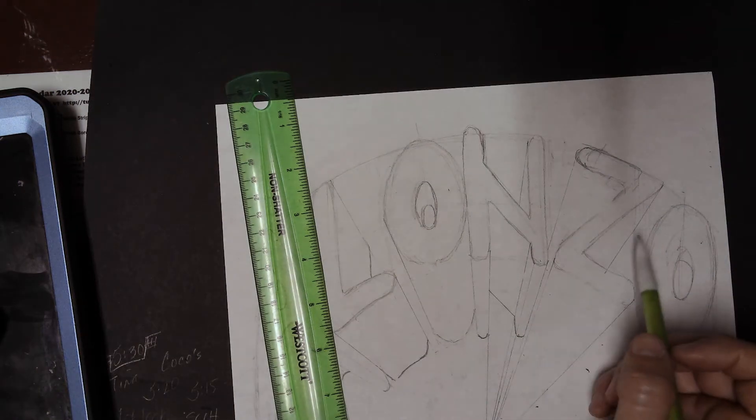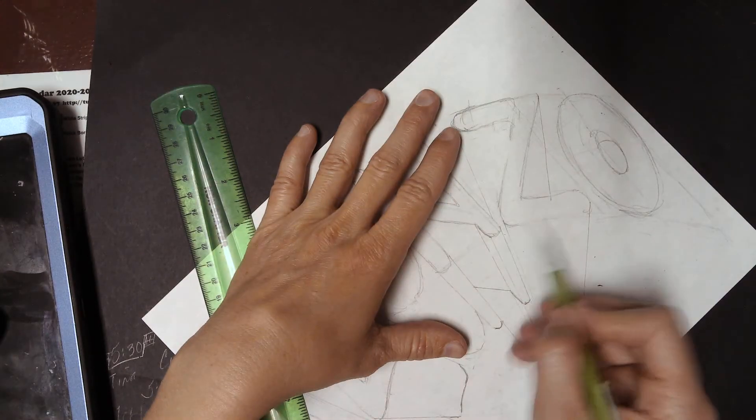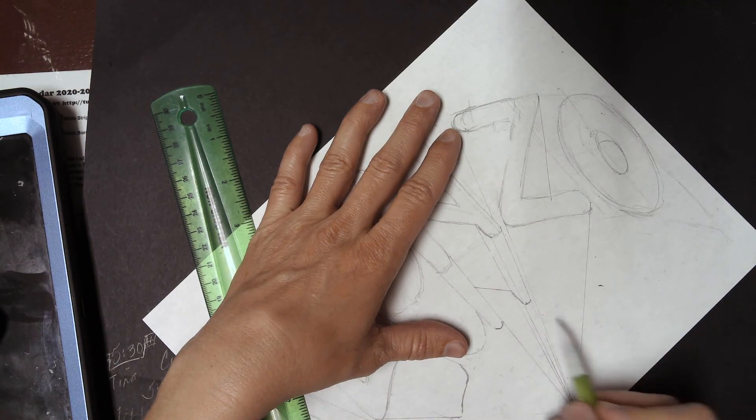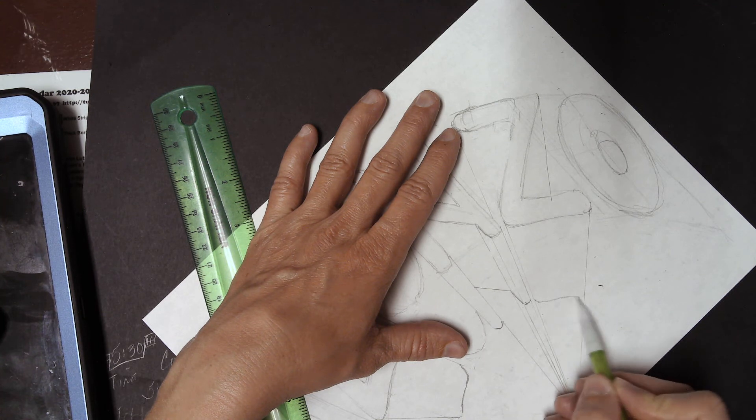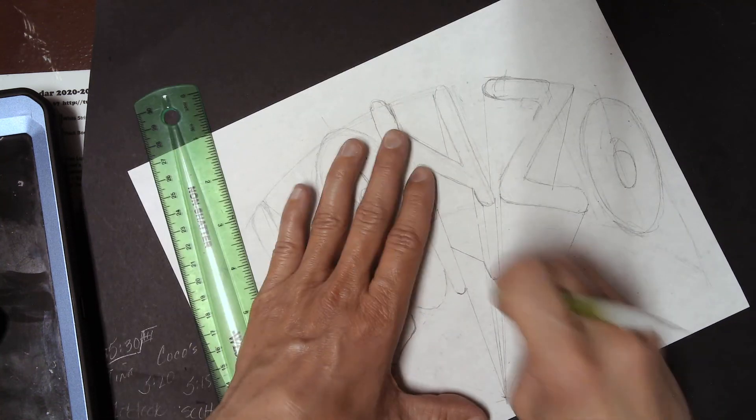To the letter Z. And, let's see. Let's start with the bottom since we've been starting with the bottom for most of this time. It curves up a little bit in the middle, so I'm just going to copy it exactly as it was from the original shape.